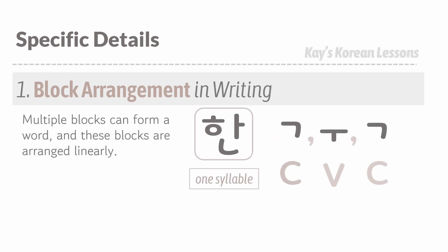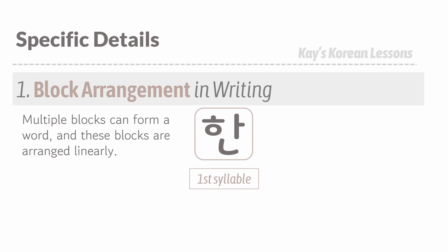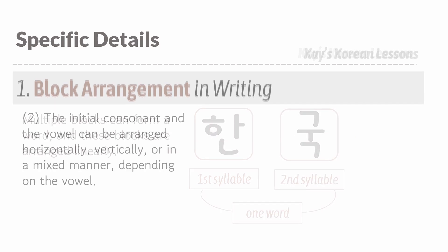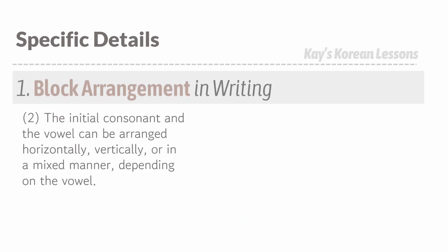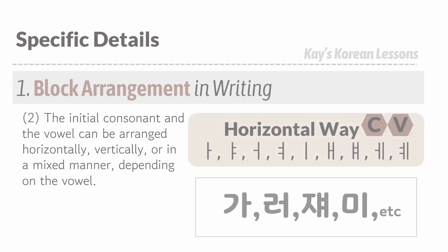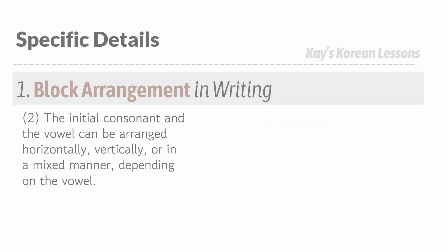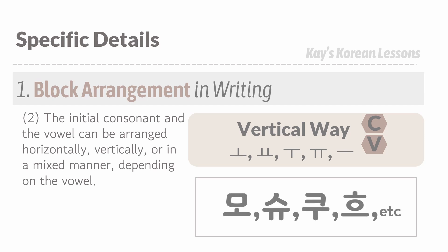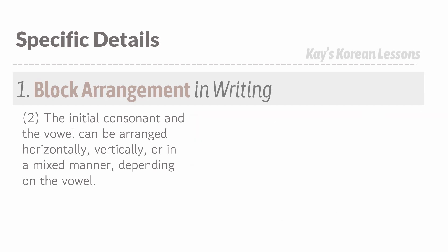Multiple blocks can form a word and they are arranged linearly. Each syllable block has a consonant on the left and a vowel to the right, or it could have a consonant on top and a vowel underneath it, depending on the vowels they have.